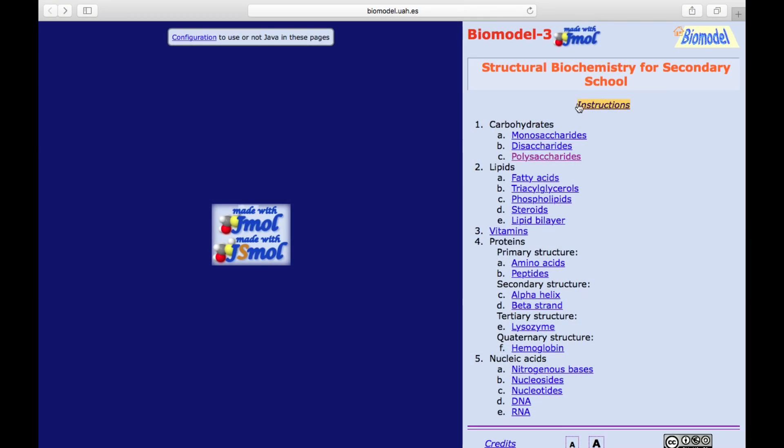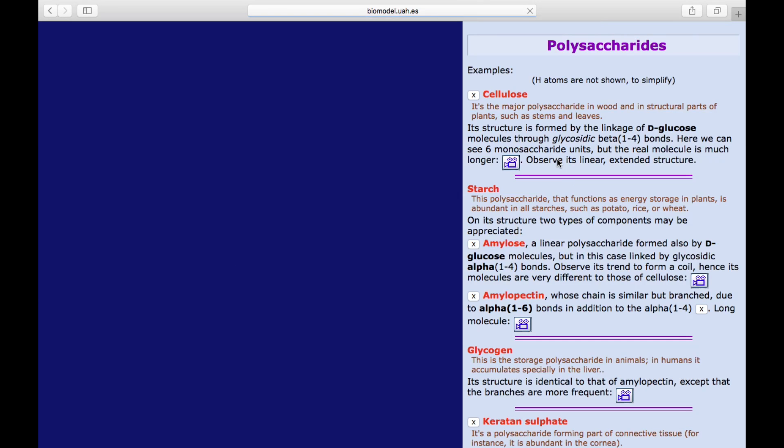To compare the structures of cellulose, starch and glycogen, I'm going to use some excellent molecular visualization software which you can find online called BioModel 3. I'll give you the reference at the end of the video.